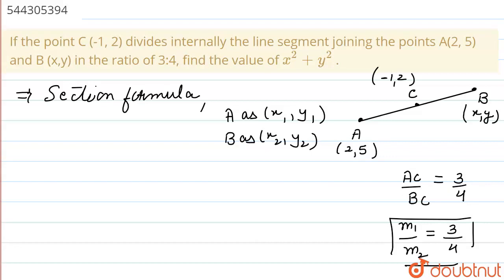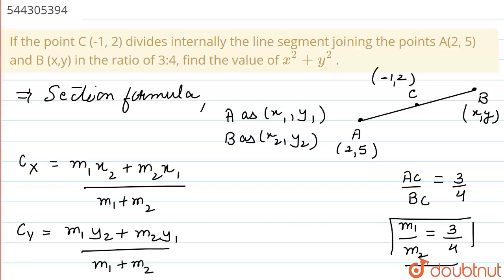The formula: the abscissa of C can be written as (M1·x2 + M2·x1) upon (M1 + M2). Here we have this formula, where x1, y1 represent point A and x2, y2 represent point B. Similarly, I can write that the y coordinate of point C can be written as (M1·y2 + M2·y1) upon (M1 + M2).